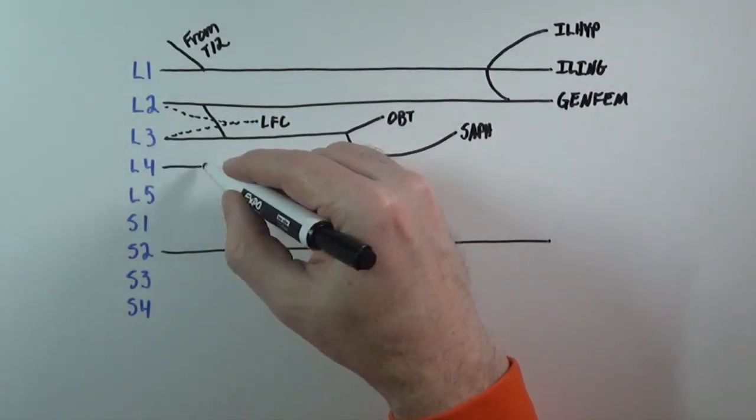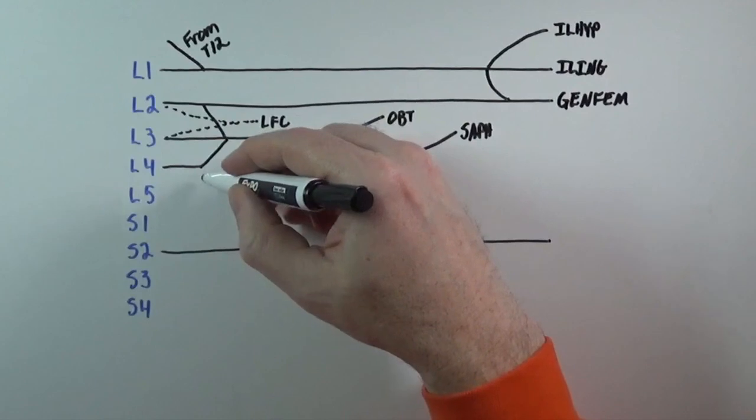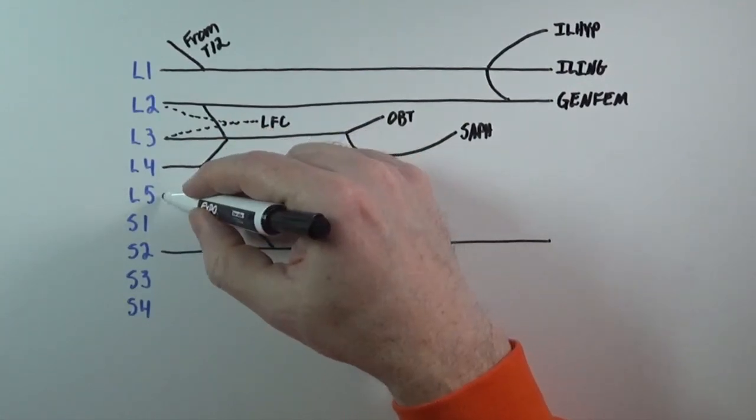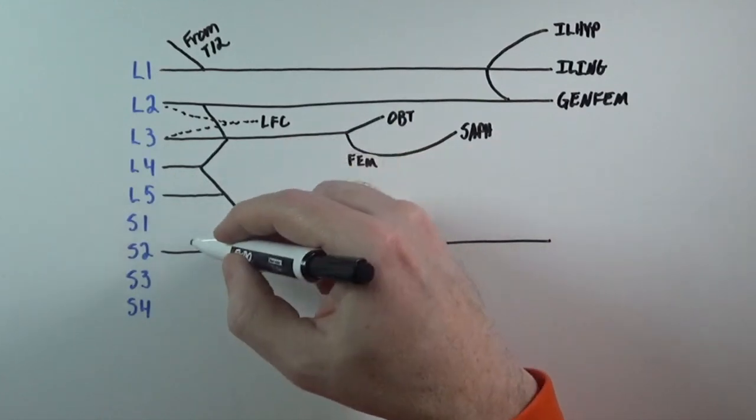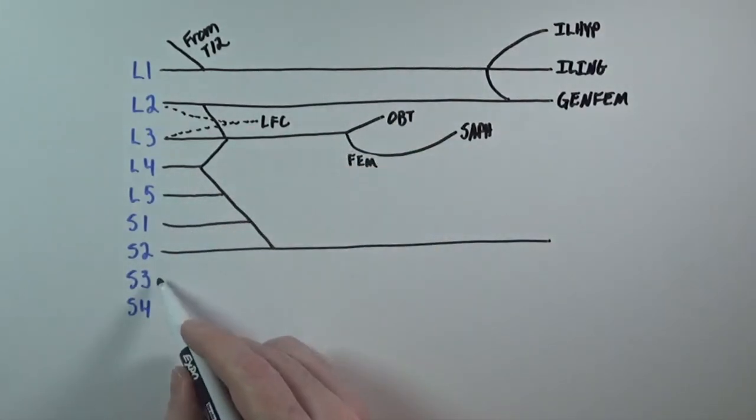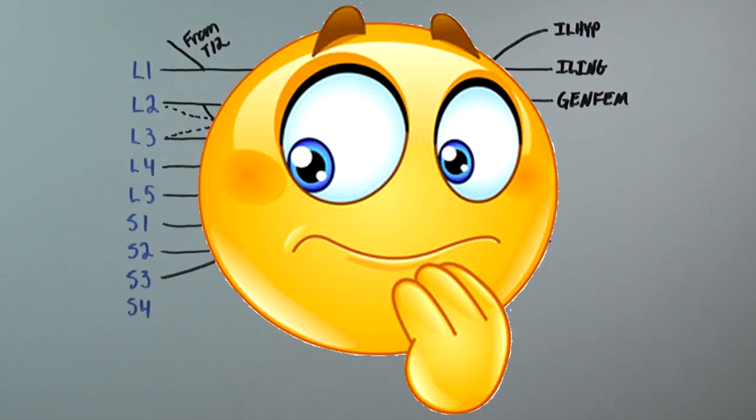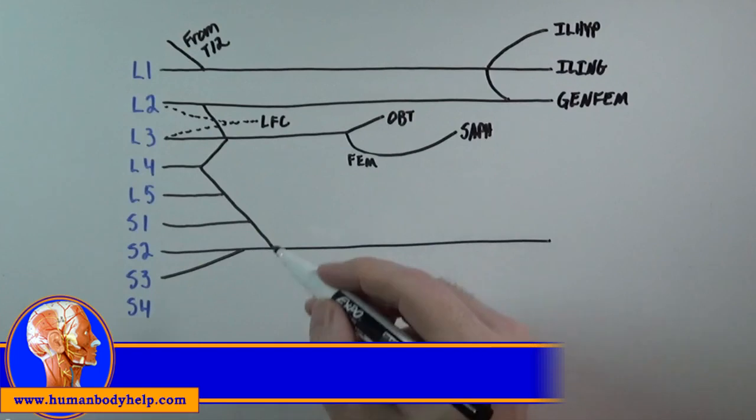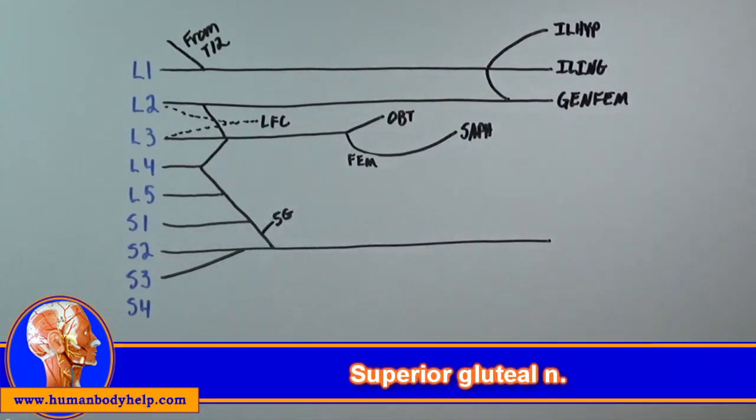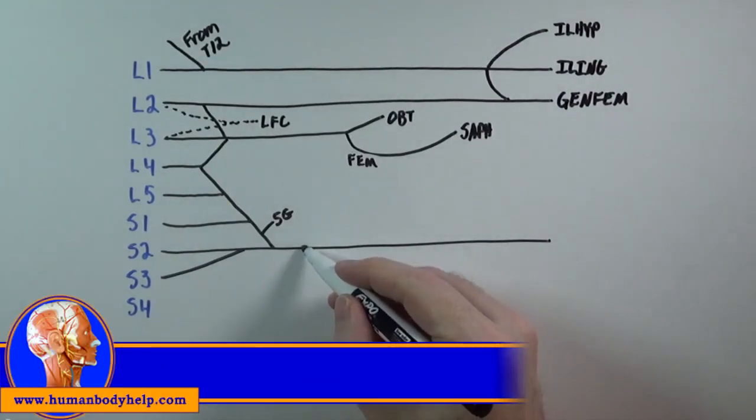Next, we'll draw the L4 nerve root and show that its fibers contribute to the nerves above and below. We'll also connect L5 and S1 to show those fibers contribute to the nerves that branch off S2. Don't forget to connect S3 as well, sometimes I forget to do that when I'm drawing this for students. The first nerve branching off the slope of this complex of fibers is the superior gluteal nerve, which supplies the gluteus medius and minimus, and also tensor fascia lata.